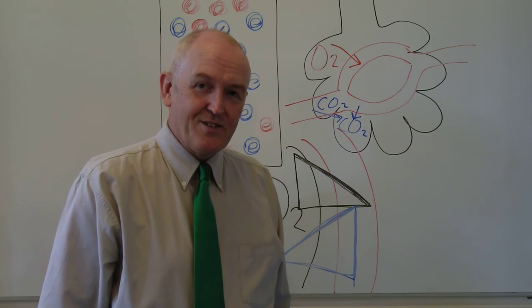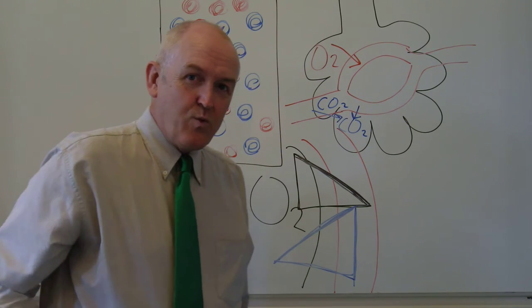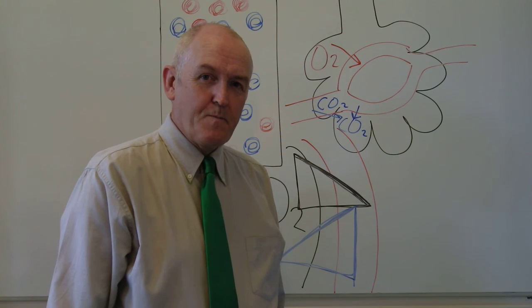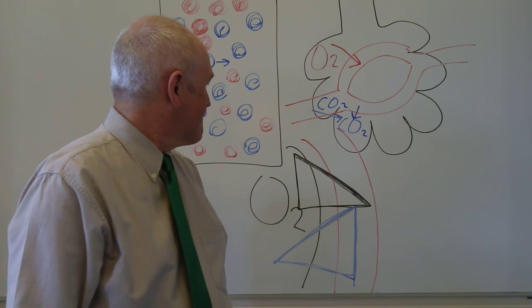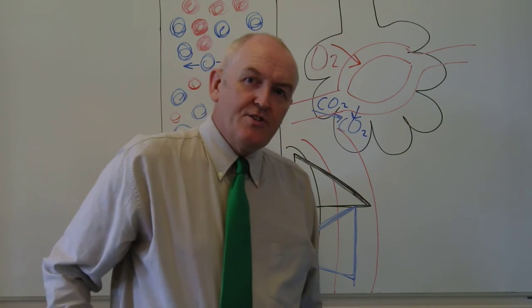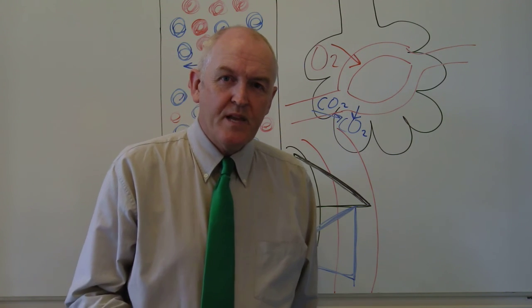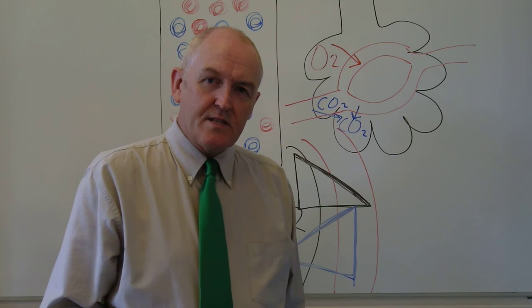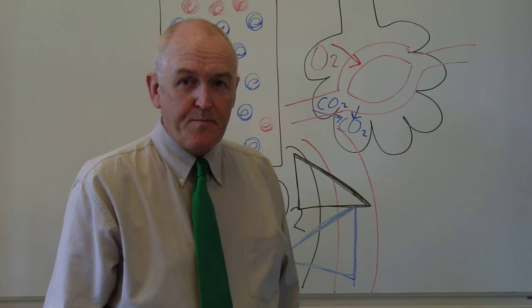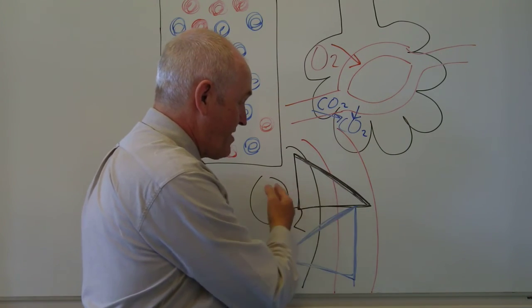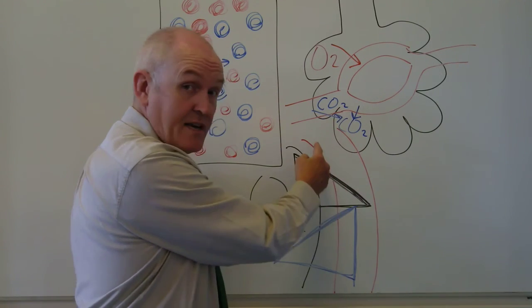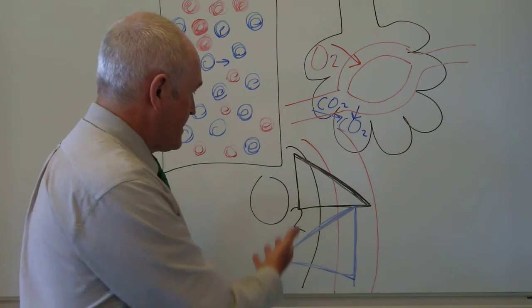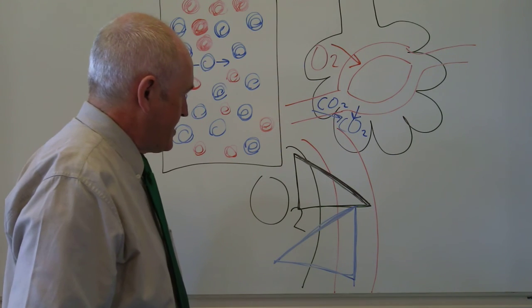This process is absolutely necessary: if it did not happen we would not be able to oxygenate the blood and life could not continue. As you learn more about human biology you'll come across many other instances of diffusion. Sometimes it takes place through a membrane — in the lungs we have both the capillary endothelial membrane and the alveolar membrane, both of which need to be permeable to oxygen and carbon dioxide.